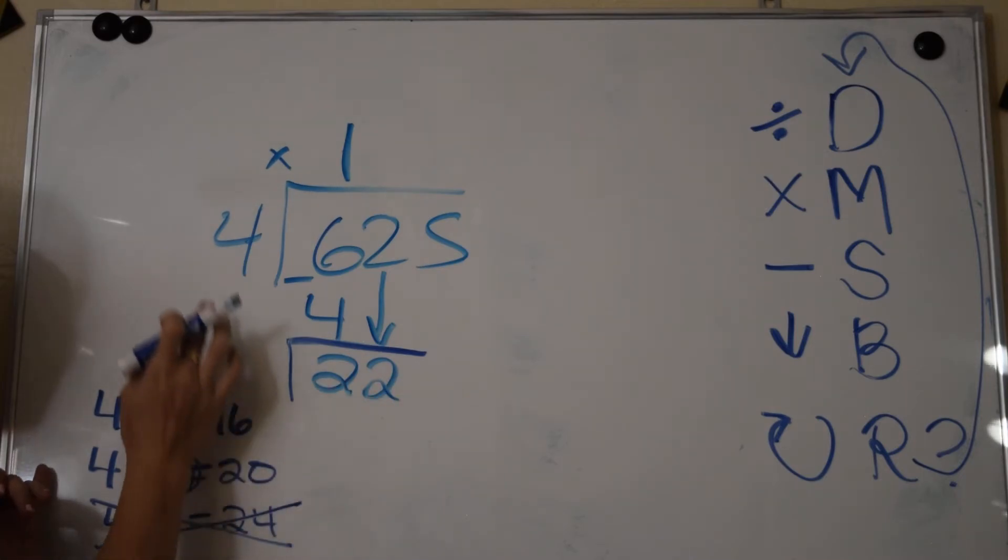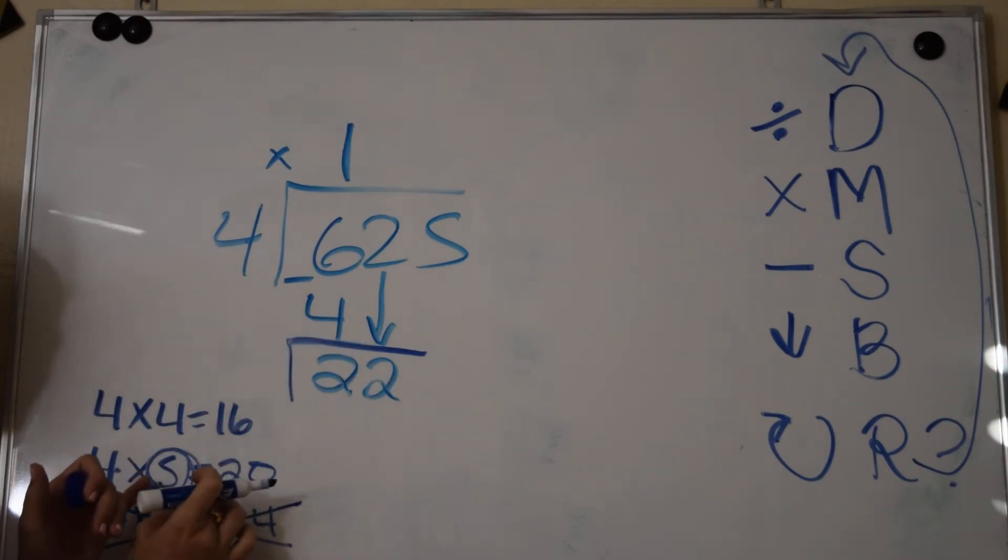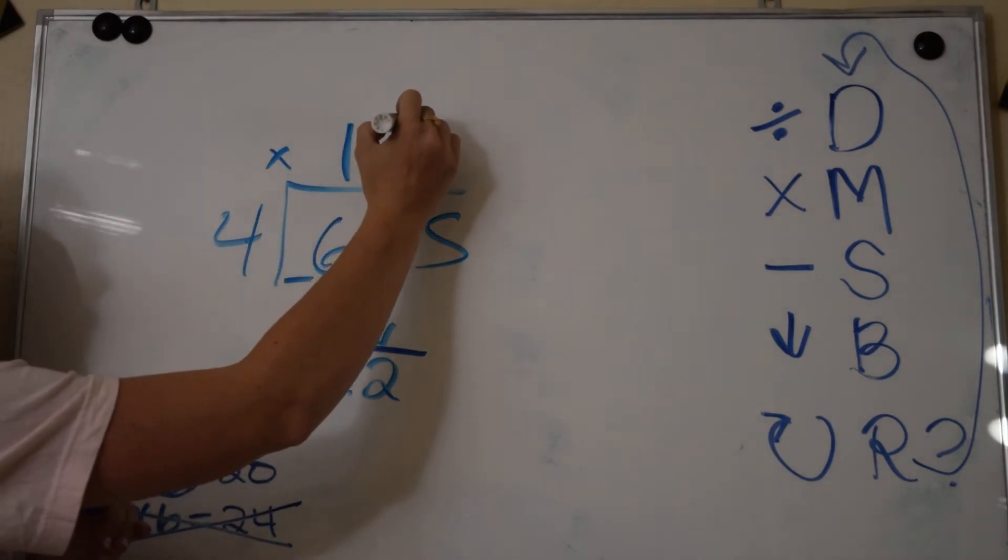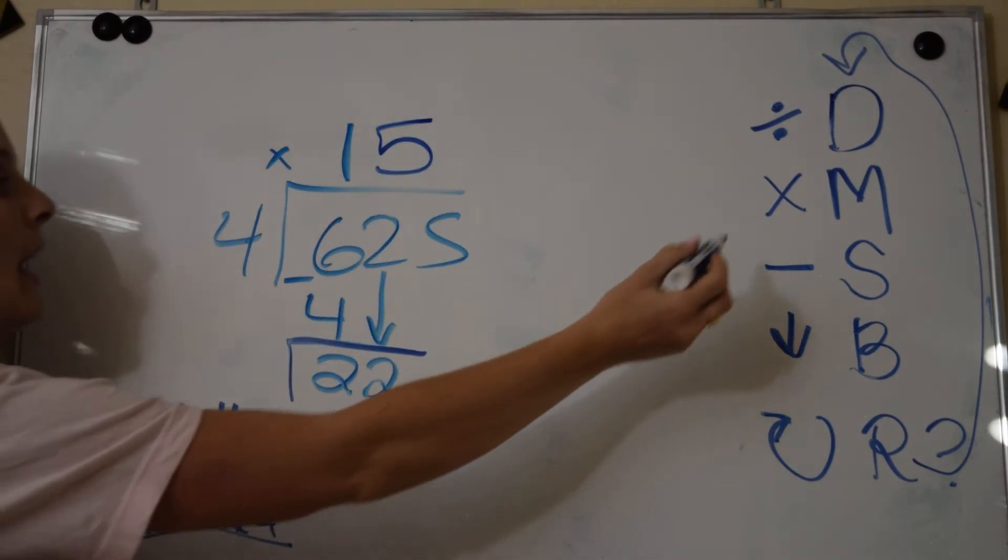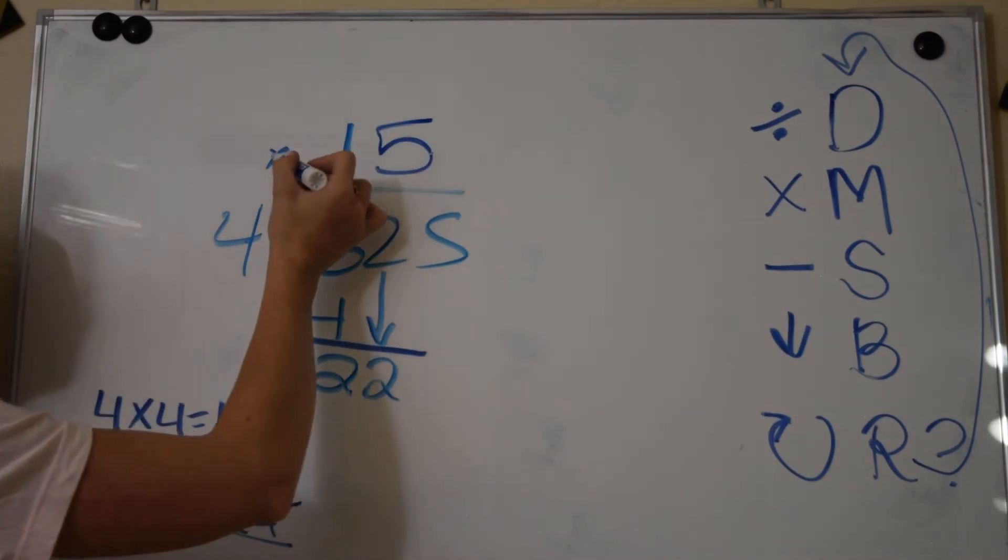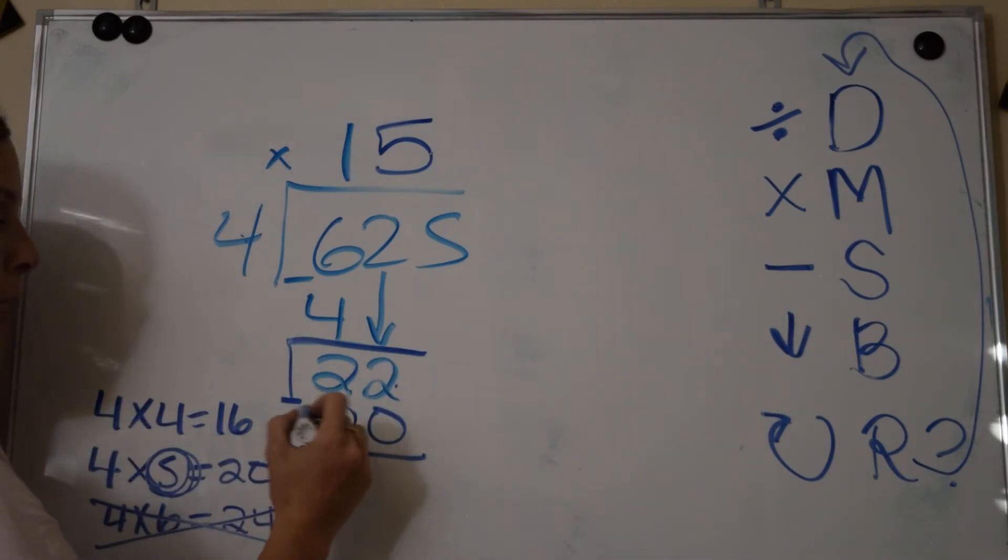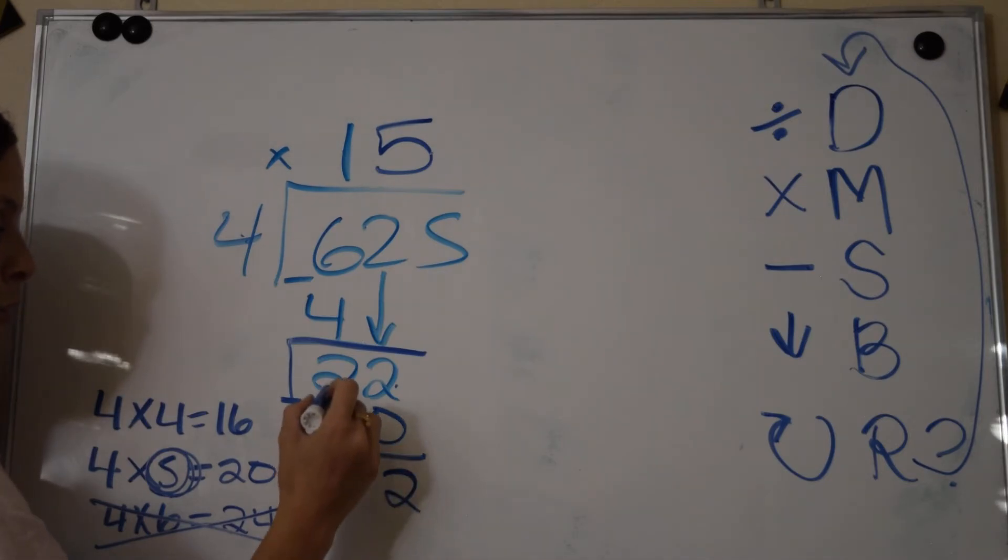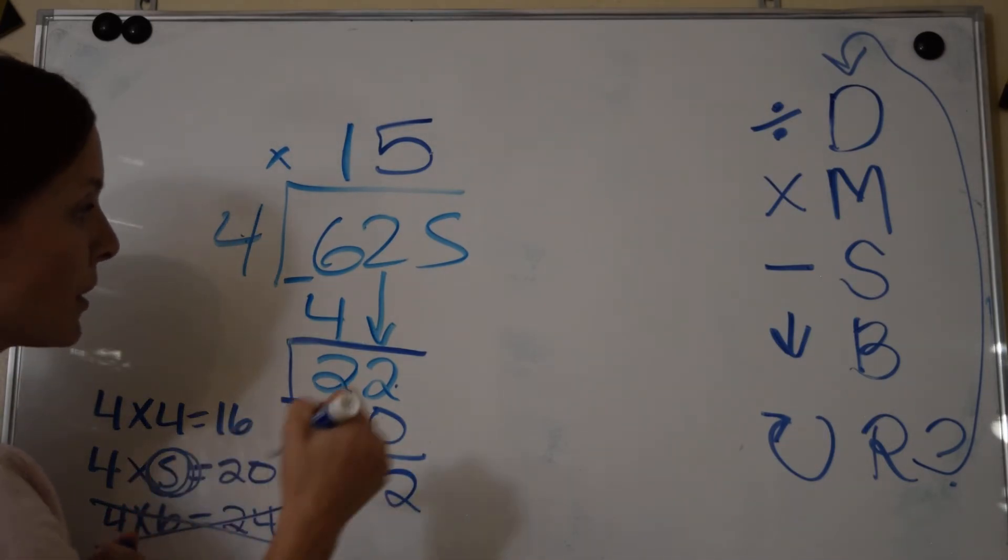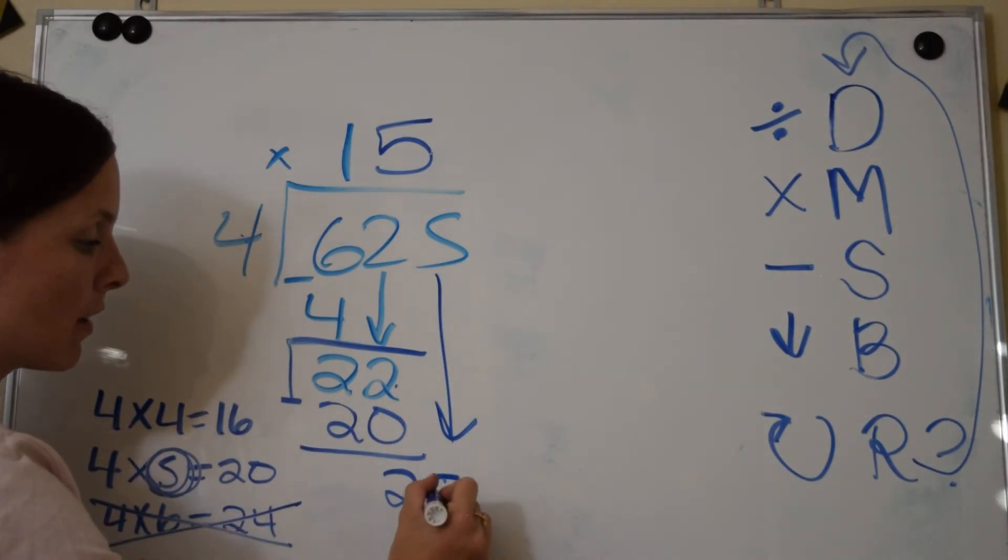So the most it can fit is only 5 times. We were dividing to see how many times 4 can fit in 22. The most it can fit is 5 times, so place your 5. Now we multiply: 5 times 4 is 20. Subtract: 2 minus 0 is 2, 2 minus 2 is 0. Bring down one digit at a time. That next digit is a 5.